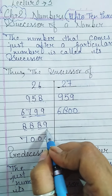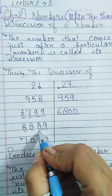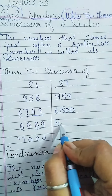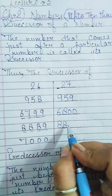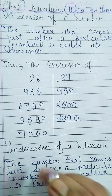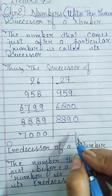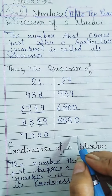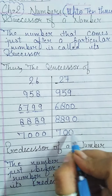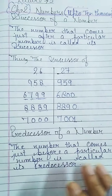Next: 8,889 — what will be its successor? The answer is 8,890. And now 7,000: 7,000 plus 1 gives us 7,001. Got it?